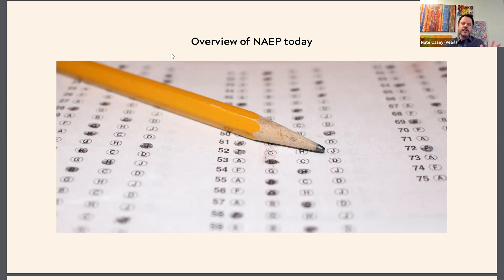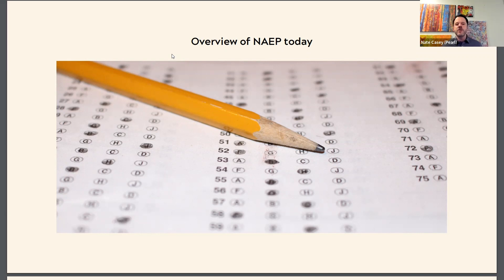This year's scores were pretty bad, but in many ways we were all expecting to see a strong national drop because of COVID. That being said, scores have been in decline over the years prior to COVID as well. Both math and reading scores have been heading down nationally since 2012.